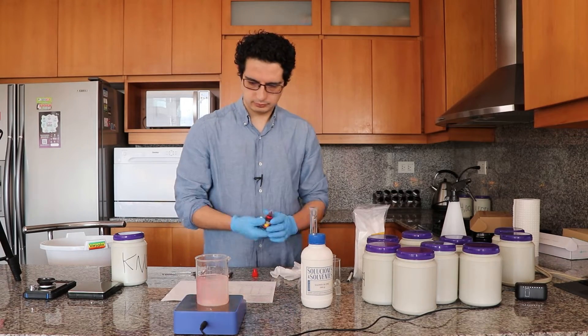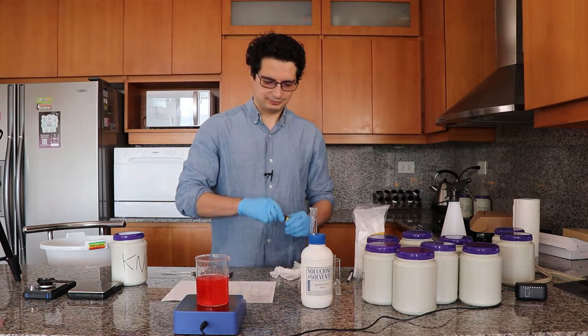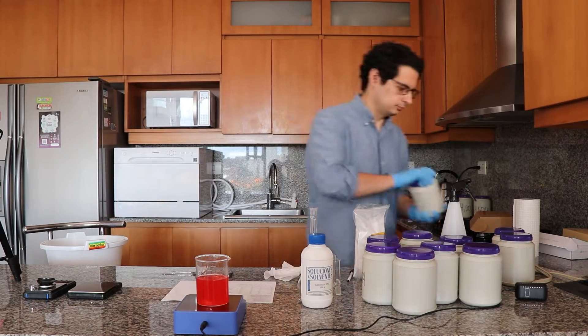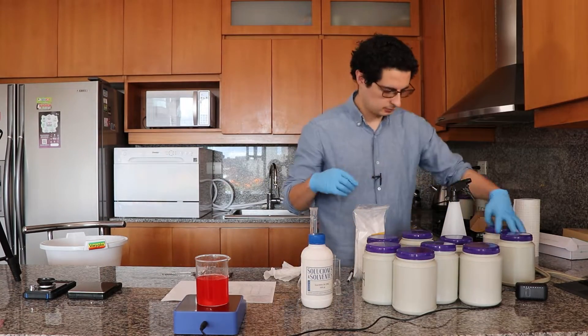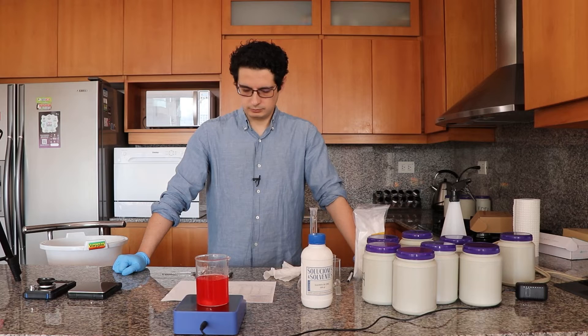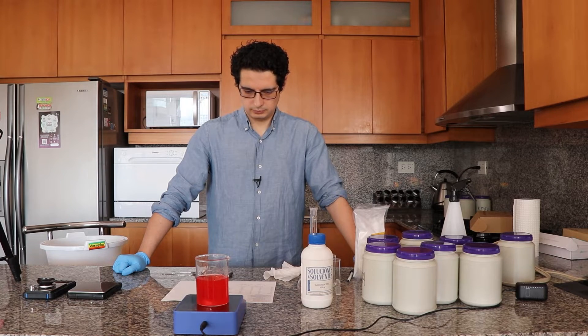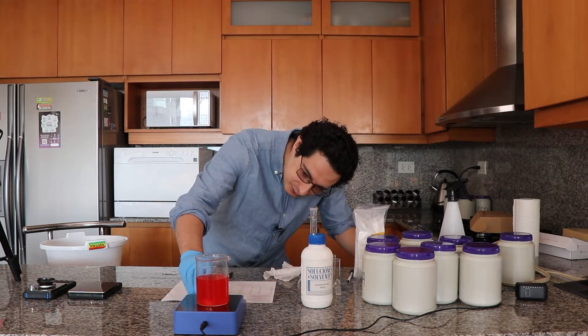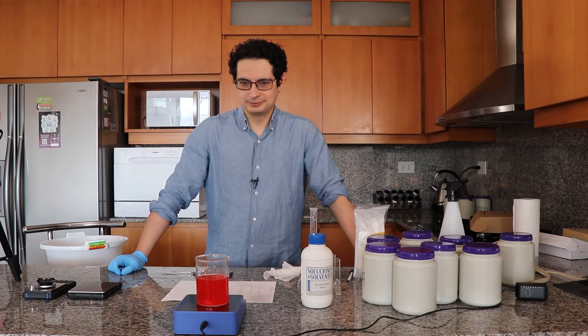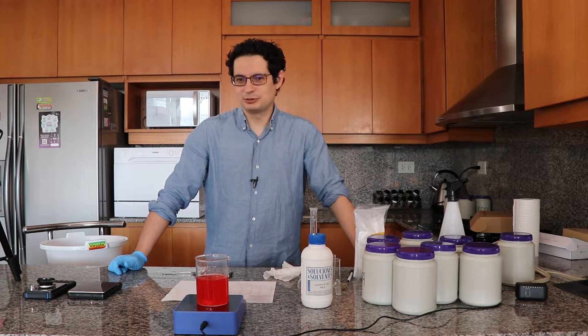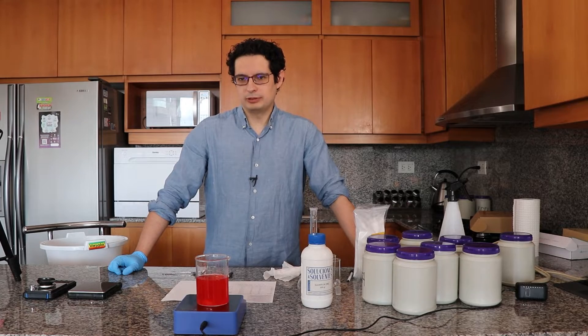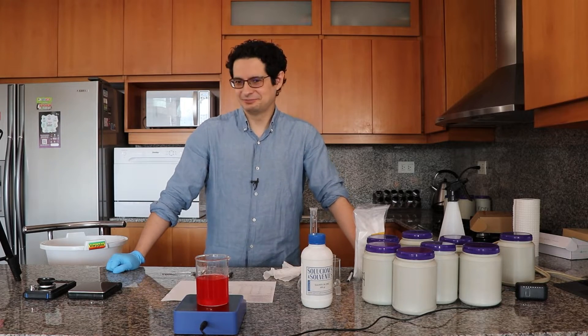Now I'm adding a little bit of dye to give the solution some color. Usually you only need a small drop to have a very intense color, so don't go crazy with the dye. Now after I confirm that everything has been fully dissolved, I will then fill the volumetric flask with this solution.